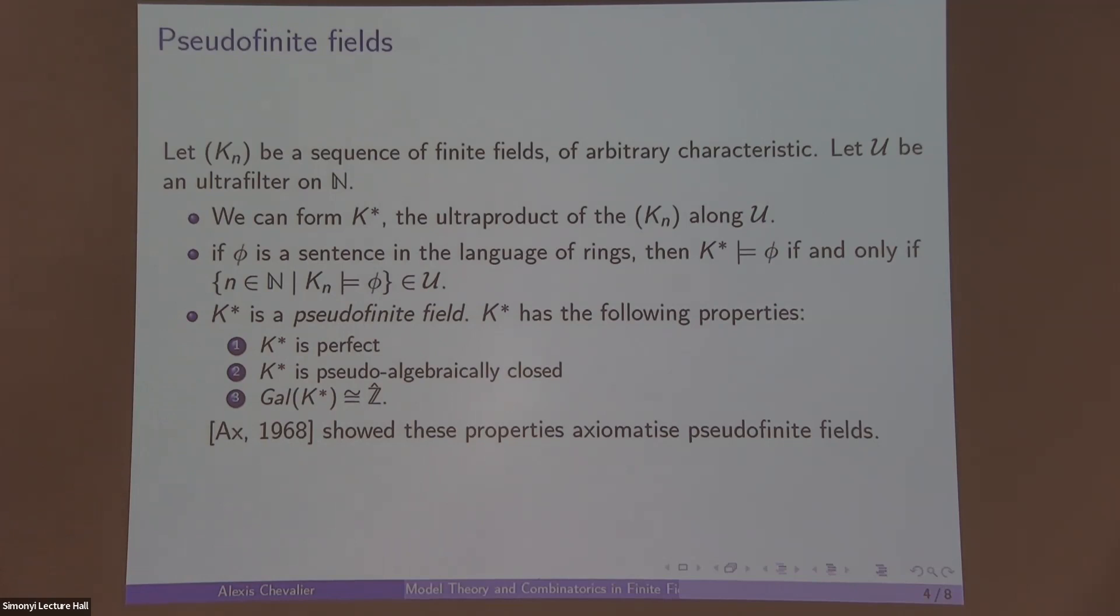Perfect is pretty easy and the other two are kind of interesting. Previously I was talking about formulas and here I'm talking about sentences, so these don't have any free variables. This is going to be for all x, for all y, there exists z. So we can just talk about the structure satisfying this sentence.